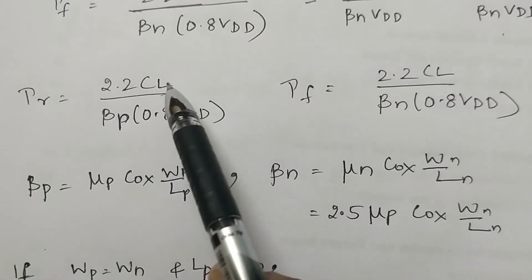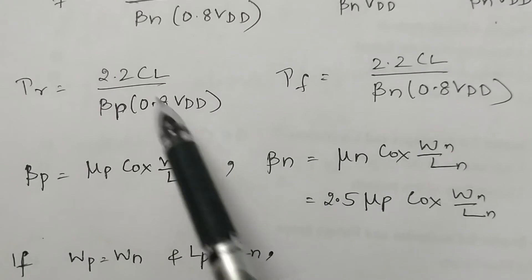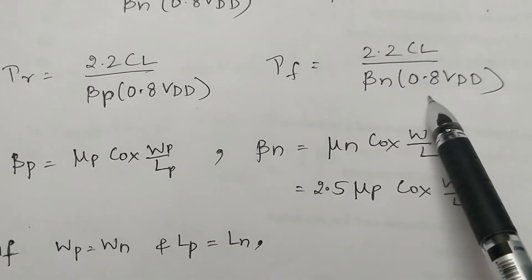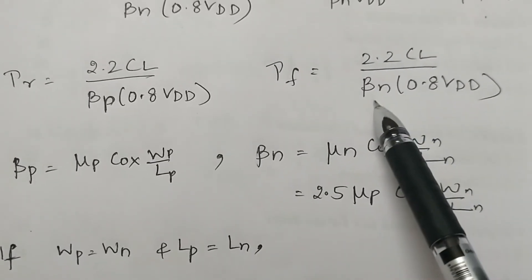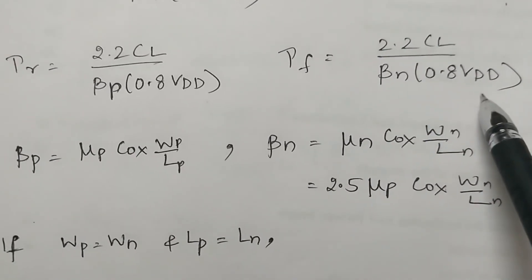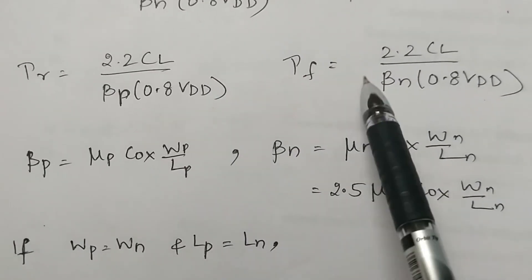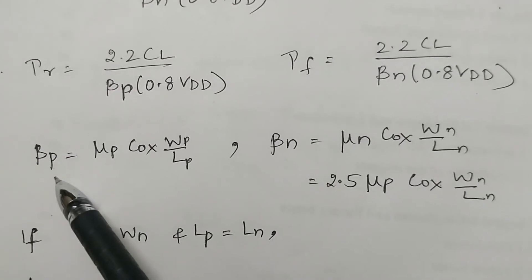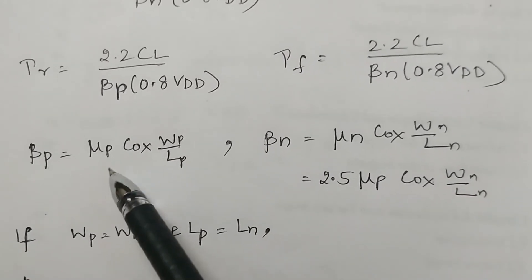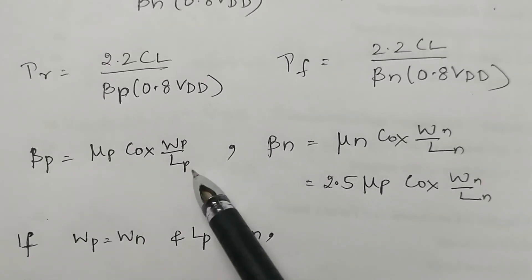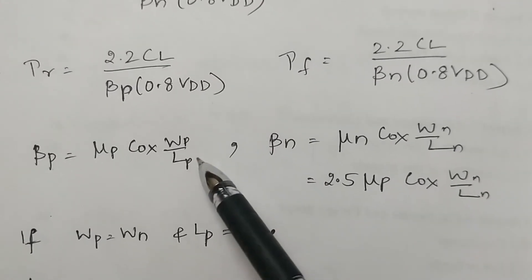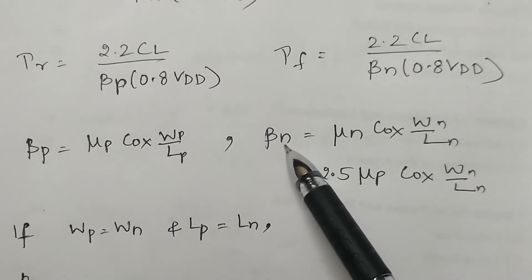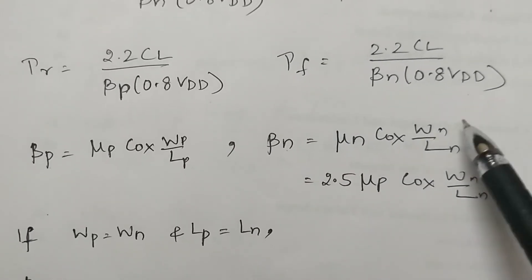To summarize: τR = 2.2·CL/(βP · 0.8·VDD) ≈ 3·CL/(βP·VDD) and τF = 2.2·CL/(βN · 0.8·VDD) ≈ 3·CL/(βN·VDD). Here βP = μP·Cox·(WP/LP) is the device transconductance of the PMOS transistor, and βN = μN·Cox·(WN/LN) is the device transconductance of the NMOS transistor.